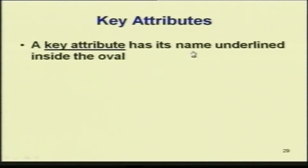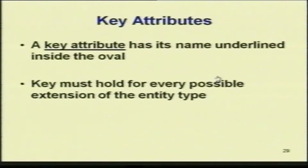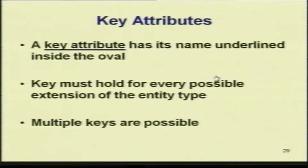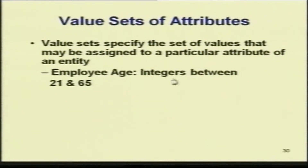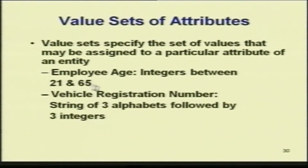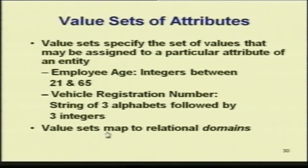Key attributes usually have their names underlined, and this must hold for every possible extension — however many tuples you add, this should remain valid. You can also have multiple keys, where two or more attributes can form a key. Value sets specify the set of values that may be assigned to a particular attribute of an entity. For example, if the attribute talks about colors of a car, one particular company may bring out only 5 colors — that set of colors is called the value set.